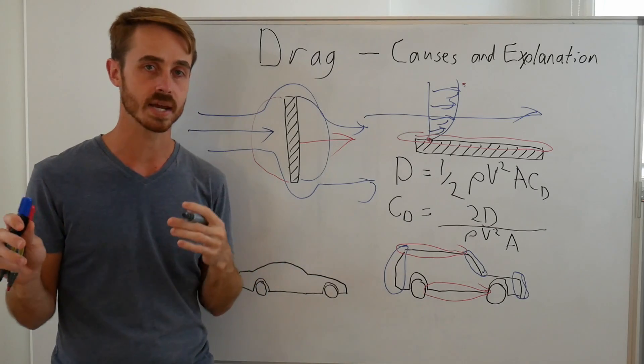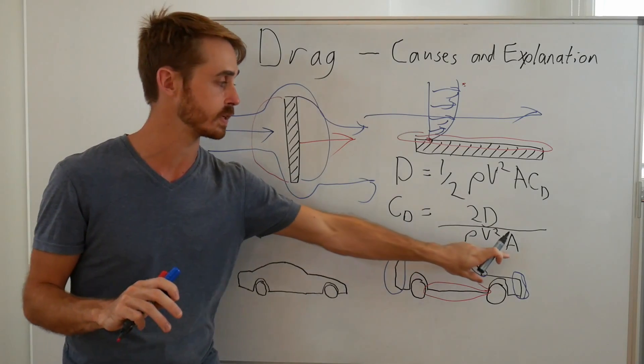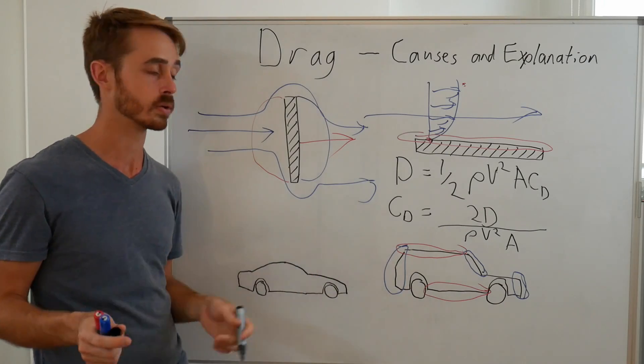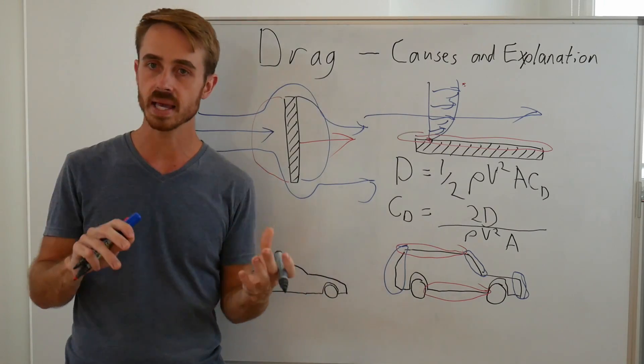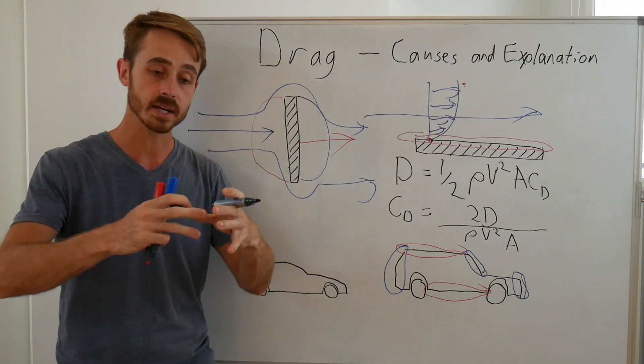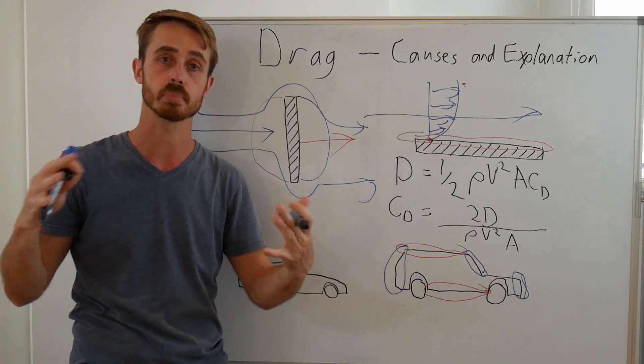Now the thing that you may have just noticed there is I was a bit confusing about the definition of area, and that's because we can actually define the area as whatever we want. If you look at a conventional plane wing or basically the standards for how aircraft wings are measured, they actually use the area from the top down, the planform area.